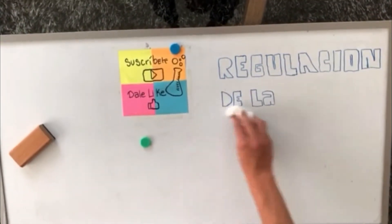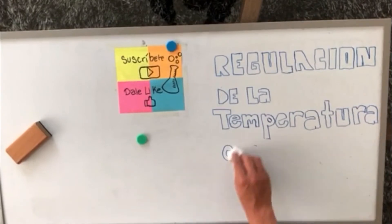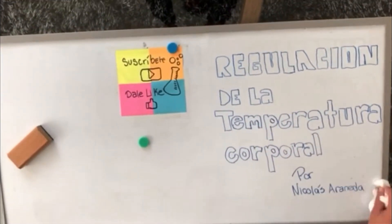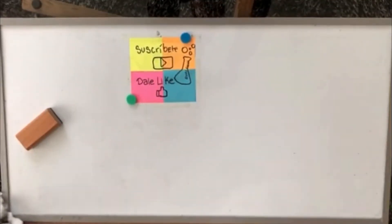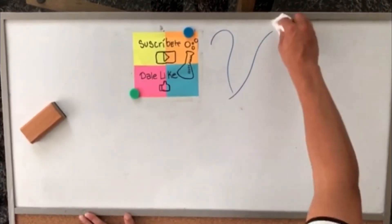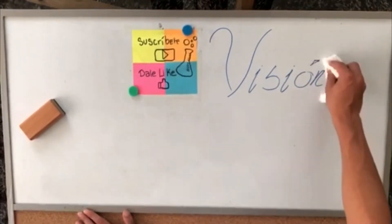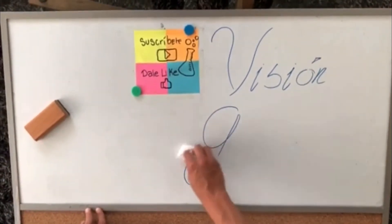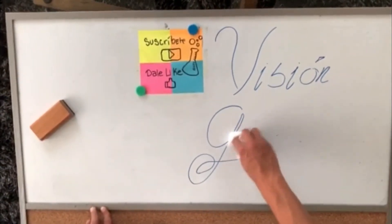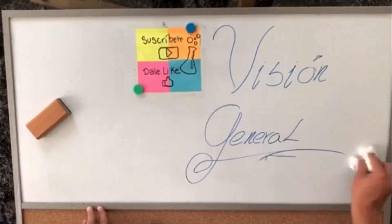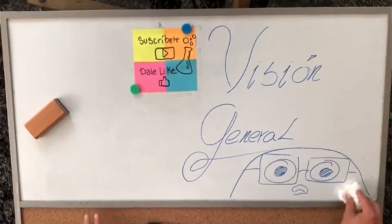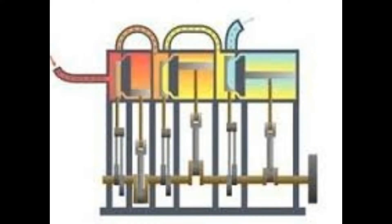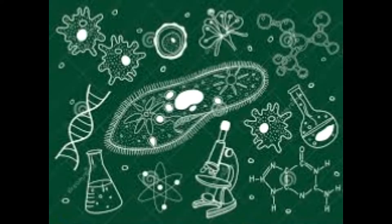Regulación de la temperatura corporal, por Nicolás Arneas y Benjamín Miranda. Visión general: la termodinámica estudia la relación entre calor y energía, y es por esto que es aplicable a una gran gama de aplicaciones. Uno de estos procesos es el proceso en los seres humanos. Este video estará enfocado desde los puntos de vista del proceso de regulación termodinámica en el cuerpo humano, desde la termodinámica biológica.